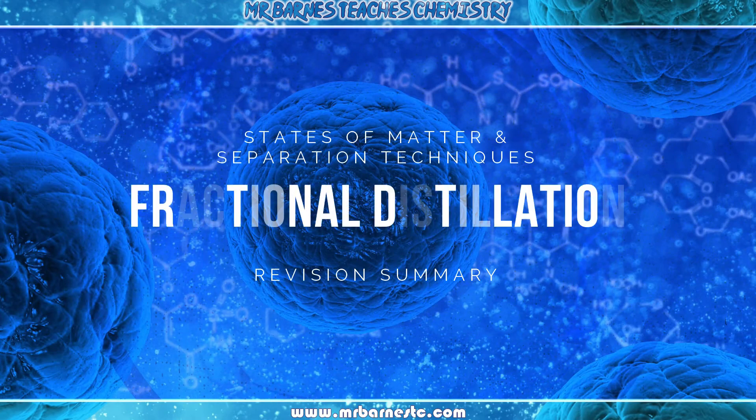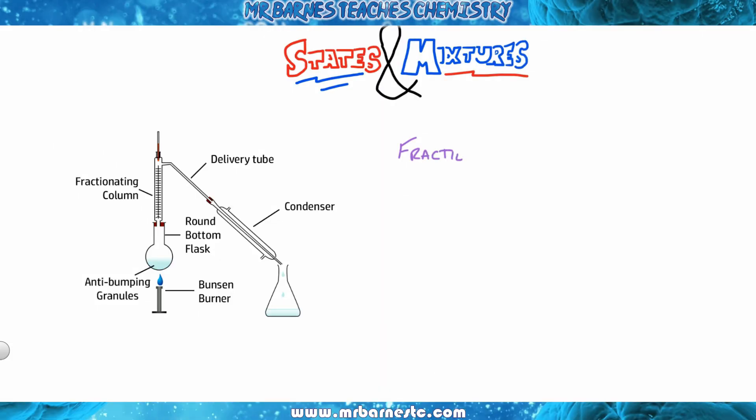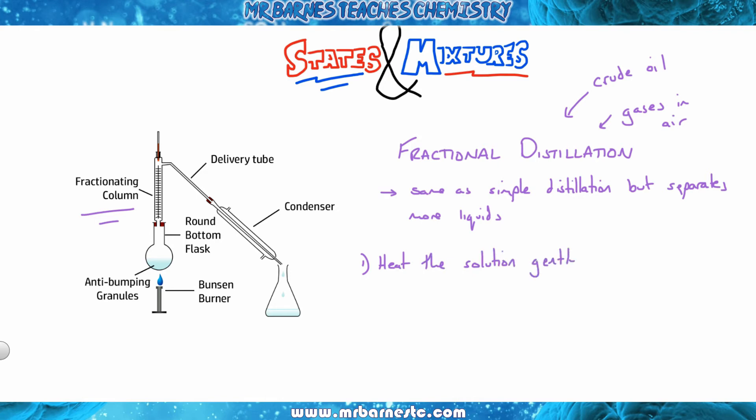If you have more complicated mixtures, for example crude oil or your gases in air, so it's more than just two liquids, usually we use something called fractional distillation to separate them. That's the same as simple distillation, but it separates more liquids. You heat the solution gently and you get something called a temperature gradient. That temperature gradient means it's going to be hotter at the bottom and cooler at the top.